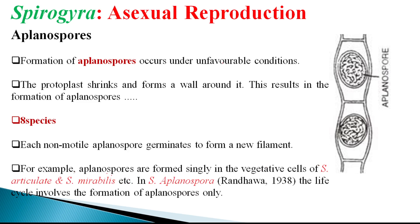In some species, asexual reproduction takes place more exclusively. It has been recorded that Spirogyra articulata and Spirogyra mirabilis are species in which a single vegetative cell produces a planospore. Furthermore, around 1938, it was recorded that Spirogyra aplanospora is the only species in which throughout the entire life cycle, only planospore formation takes place.